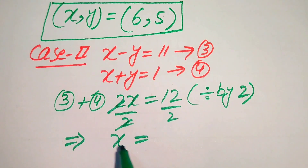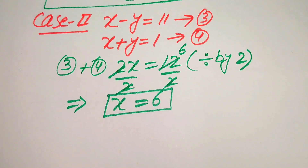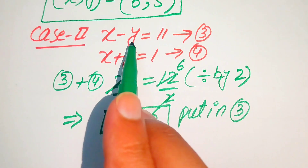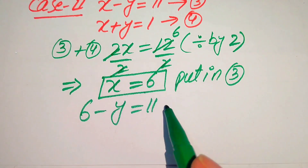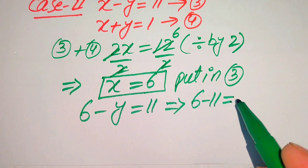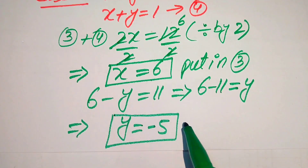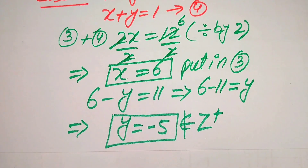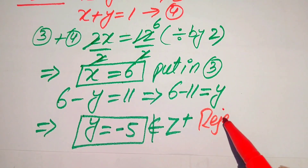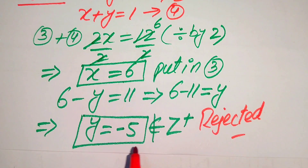We get x equals 6 from the second case as well. For the value of y, we substitute x equals 6 into equation 3: 6 minus y equals 11. Rearranging gives us 6 minus 11 equals y, so y equals minus 5. Since minus 5 is not a positive integer, we reject this case — we can only accept positive integer values, so this solution is discarded.